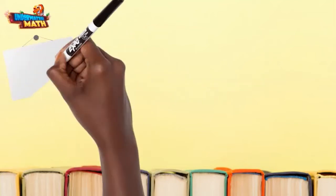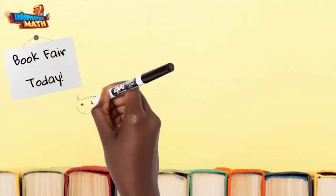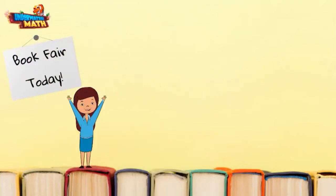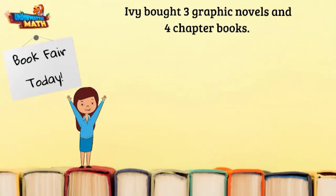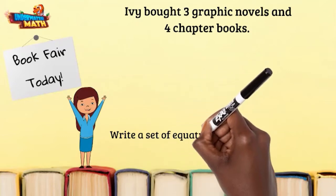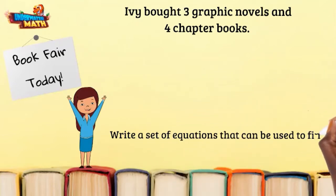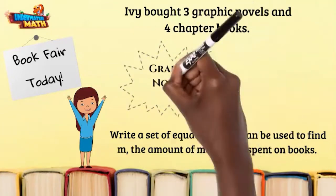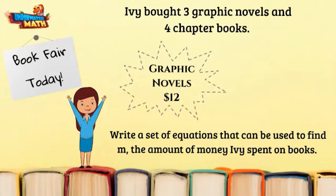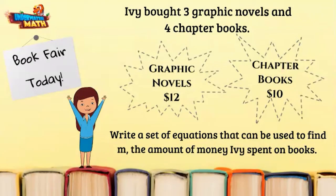It's book fair day and Ivy can't wait to get new books. Ivy bought three graphic novels and four chapter books. Write a set of equations that can be used to find m, the amount of money Ivy spent on books. Graphic novels cost $12 each and chapter books cost $10 each.